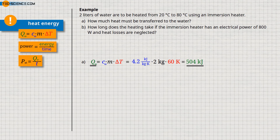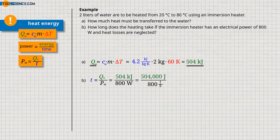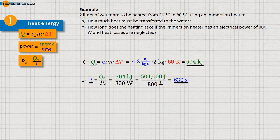So the question is after what time the immersion heater at a power of 800 watts has emitted a heat energy of 504 kilojoules and thereby transferred it to the water. Therefore, we solve the shown formula with respect to time. If we put in the respective values, we express the heat energy not in the unit kilojoules, but without unit prefix as 504,000 joules. Note that the unit watt can also be expressed as joules per second. In this way we can see that the calculated time is given in the unit second. Thus, the heating of the water requires 630 seconds, which corresponds to a duration of 10 minutes and 30 seconds.